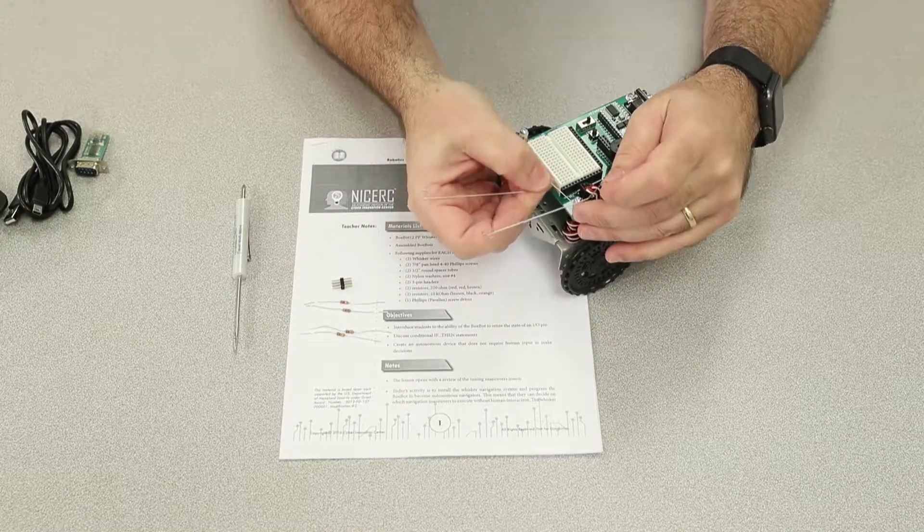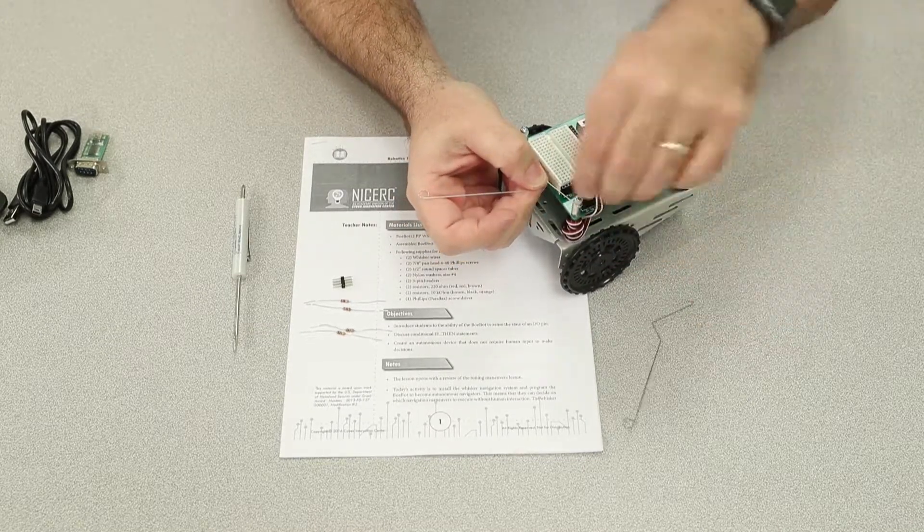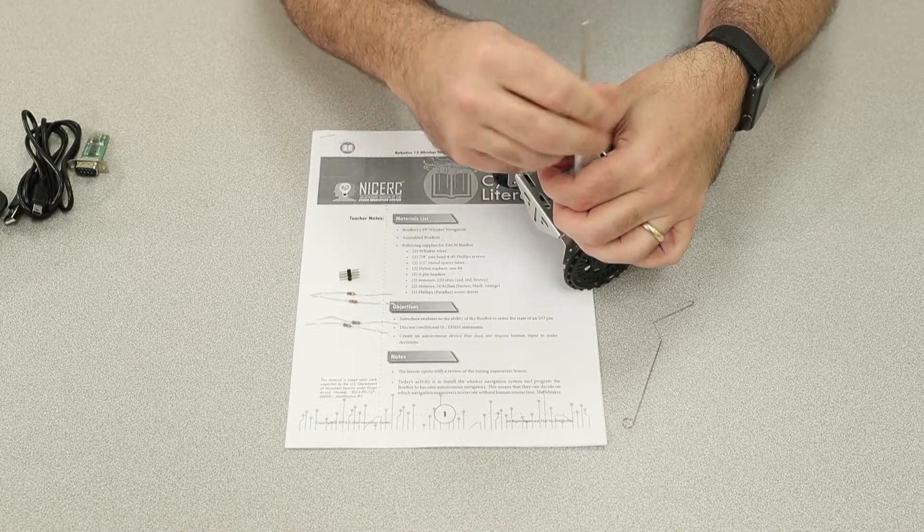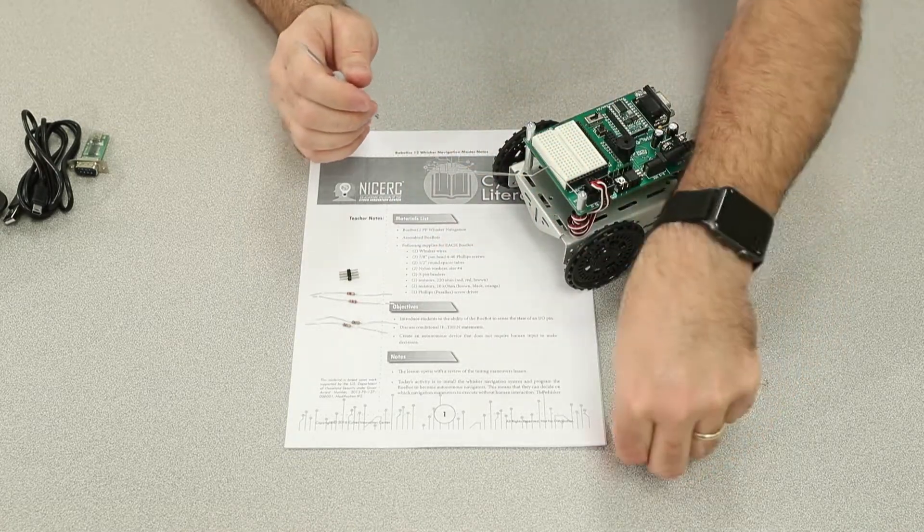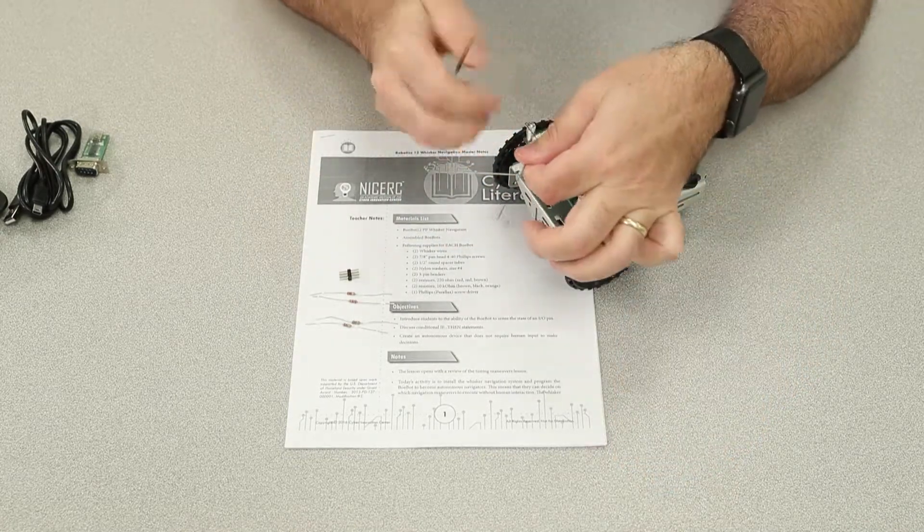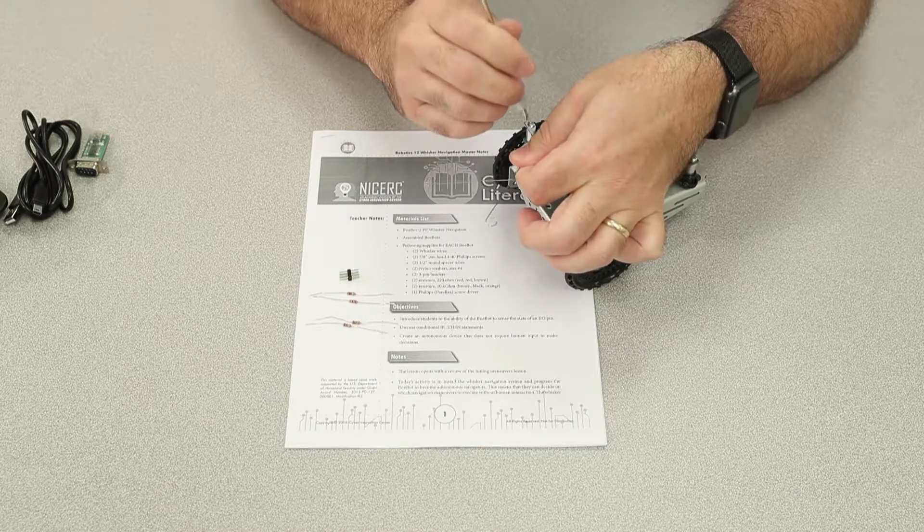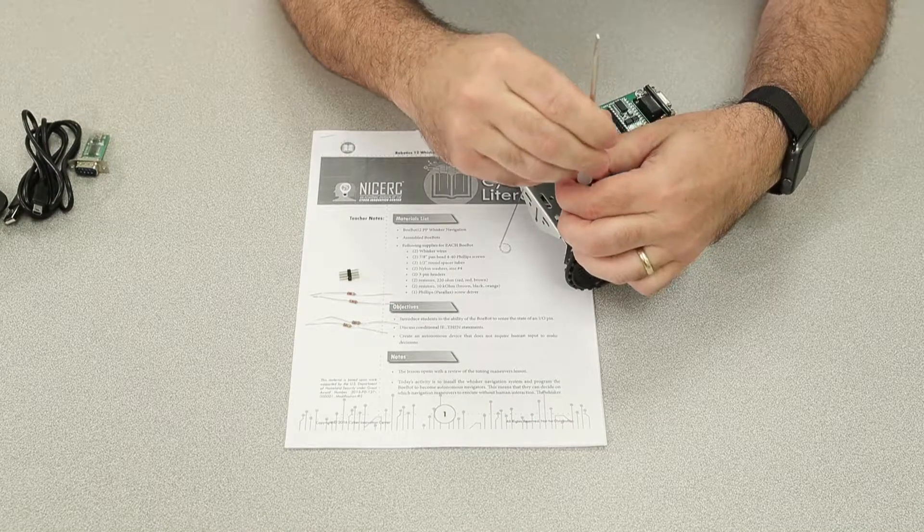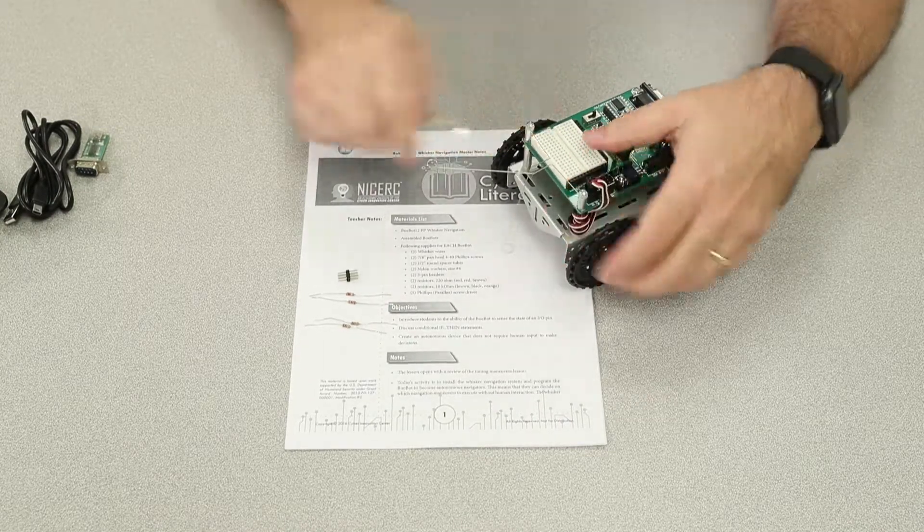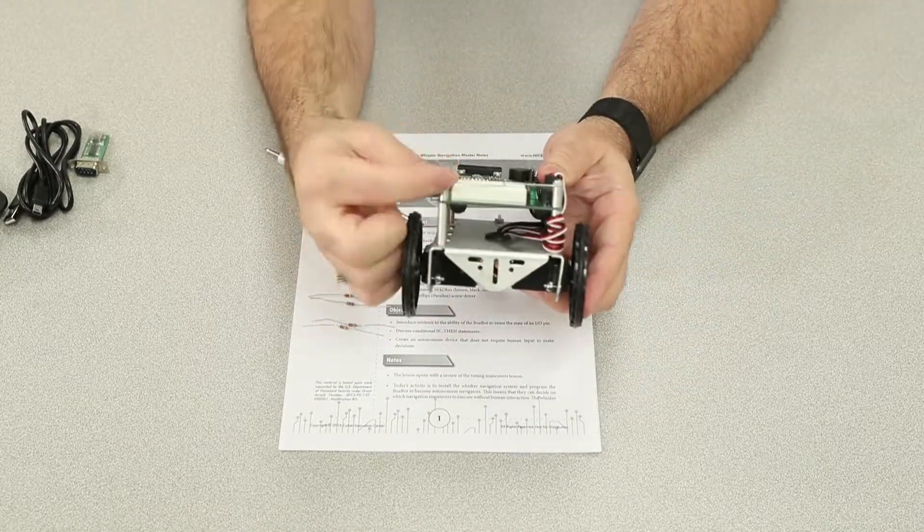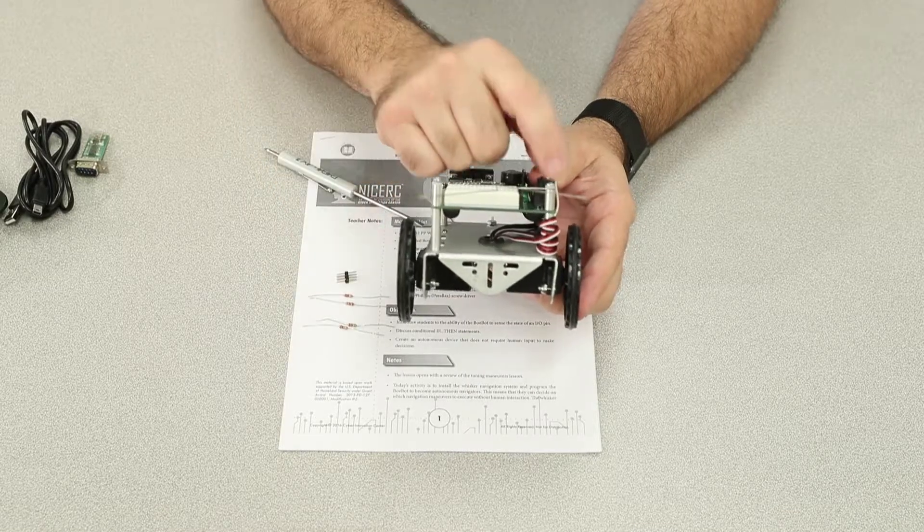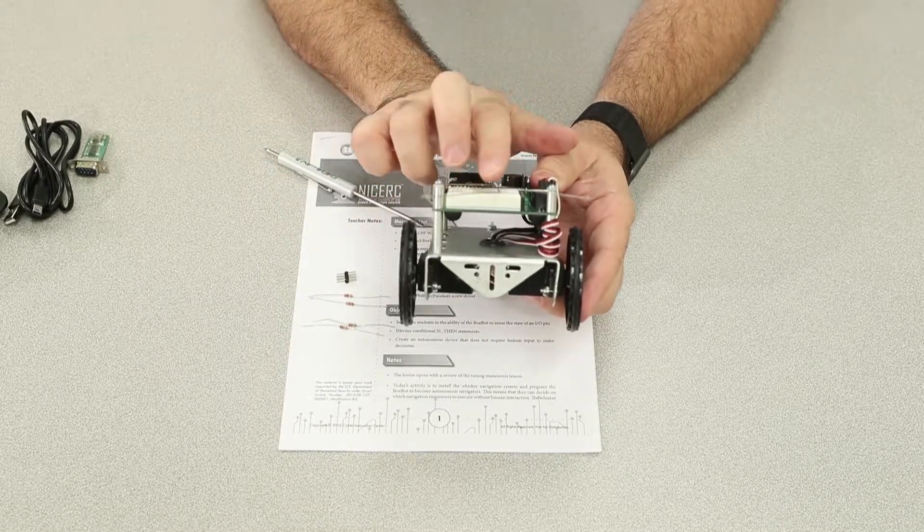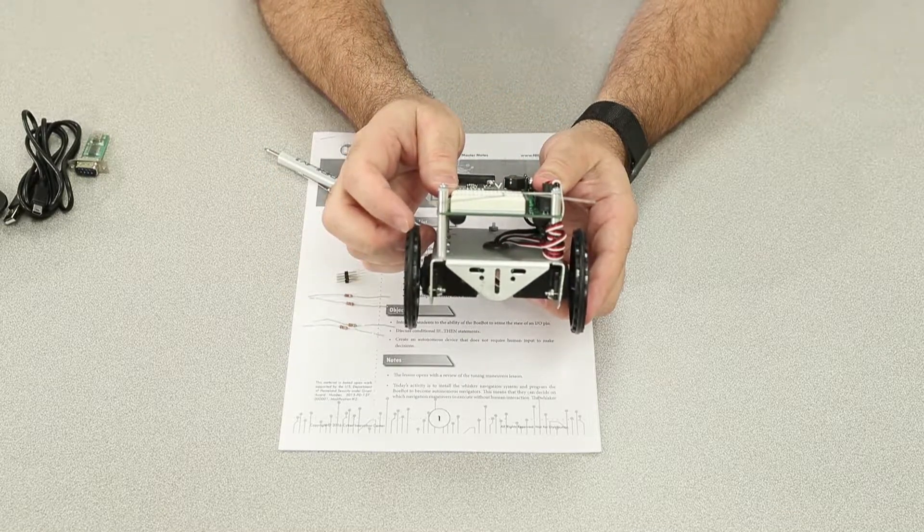We'll put this one below, and one above. So the objective here will be to have one whisker above the washer, one below the washer, and that's so they don't touch when the Bobot is standing in a neutral state.